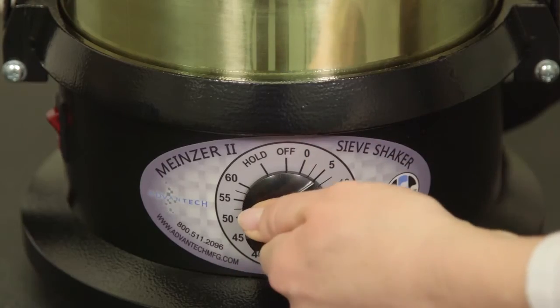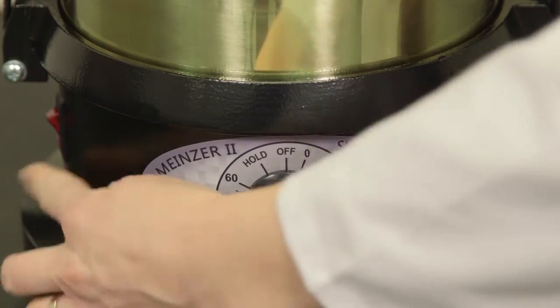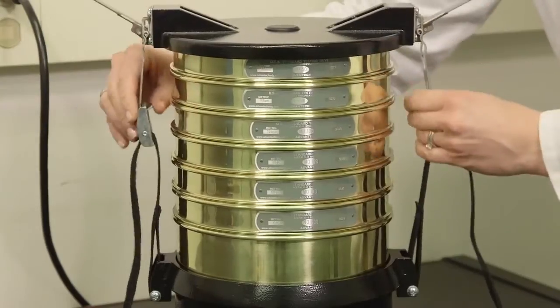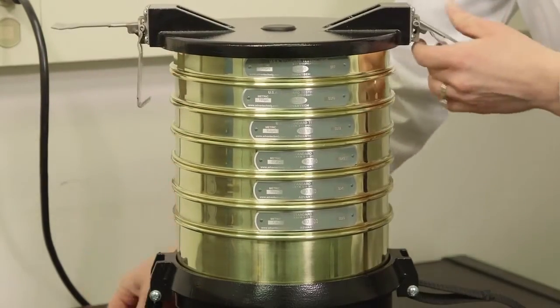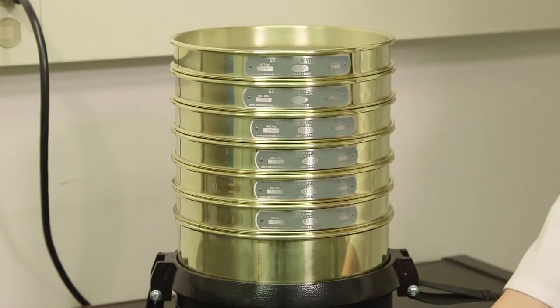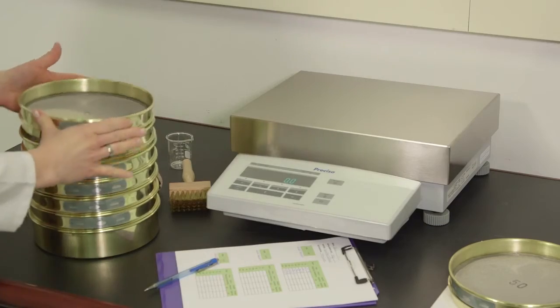Set the timer to the desired interval. Once the test run is complete, reverse the clamping procedures and carefully disassemble the stack and proceed to weigh up and calculate the retained fractions.